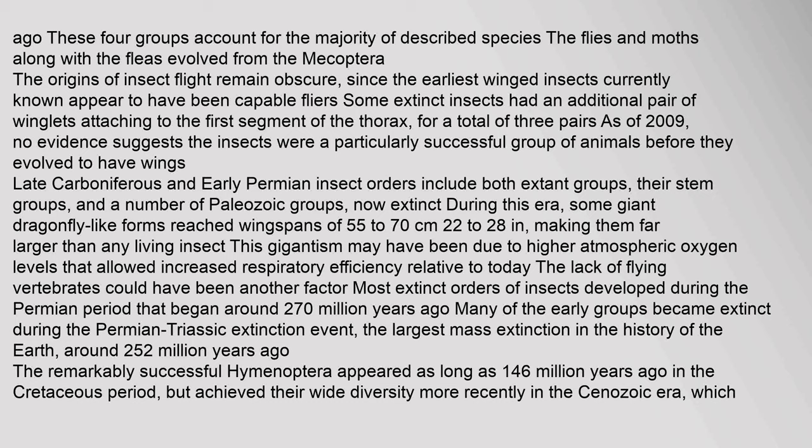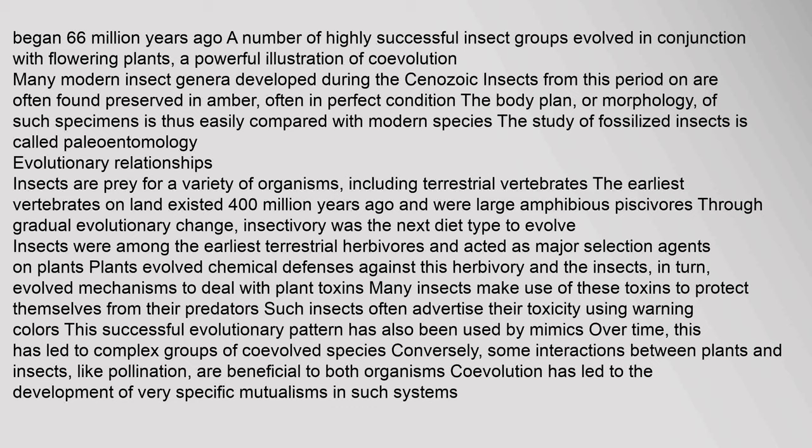No evidence suggests insects were a particularly successful group before they evolved wings. Late Carboniferous and early Permian insect orders include both extant groups and a number of Paleozoic groups now extinct; during this era, some giant dragonfly-like forms reached wingspans of 55 to 70 cm. Beginning 66 million years ago, many highly successful insect groups evolved in conjunction with flowering plants, a powerful illustration of coevolution. Many modern insect genera developed during the Cenozoic; insects from this period are often found preserved in amber in perfect condition. The study of fossilized insects is called Paleoentomology.